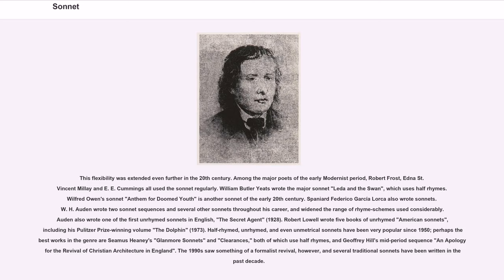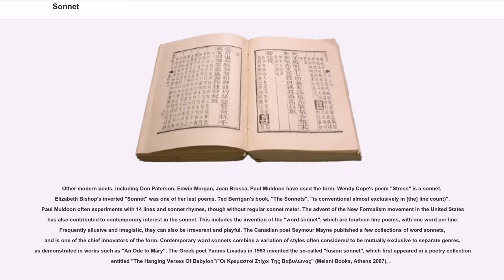The 1990s saw something of a formalist revival, and several traditional sonnets have been written in the past decade. Other modern poets, including Don Paterson, Edwin Morgan, Joan Brossa, and Paul Muldoon have used the form. Wendy Cope's poem stresses a sonnet; Elizabeth Bishop's inverted sonnet was one of her last poems. Ted Berrigan's book The Sonnets is conventional almost exclusively in the line count. Paul Muldoon often experiments with fourteen lines and sonnet rhymes, though without regular sonnet meter. The advent of the New Formalism movement in the United States has also contributed to contemporary interest in the sonnet, including the invention of the word sonnet — fourteen-line poems with one word per line, frequently elusive and imagistic, but also irreverent and playful. The Canadian poet Seymour Mayne published a few collections of word sonnets and is one of the chief innovators of the form.